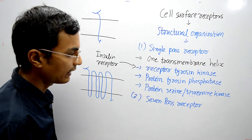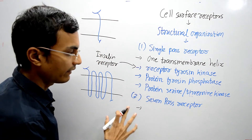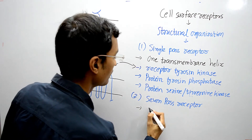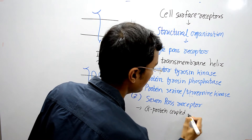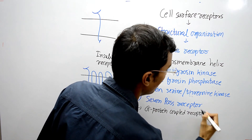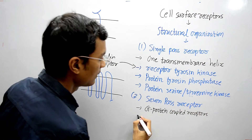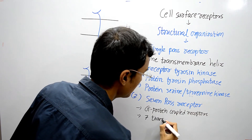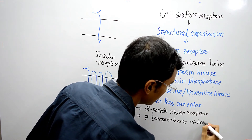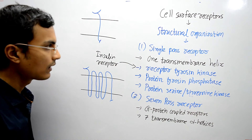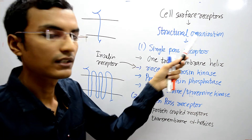Examples of 7-pass receptors: all G-protein coupled receptors are 7-pass receptors. These receptors have 7 transmembrane alpha helixes. That is the grouping of receptors on the basis of structural organization.